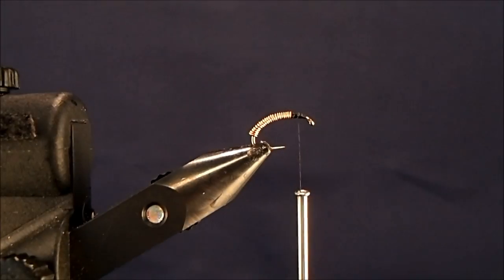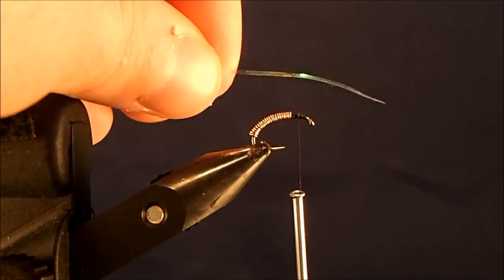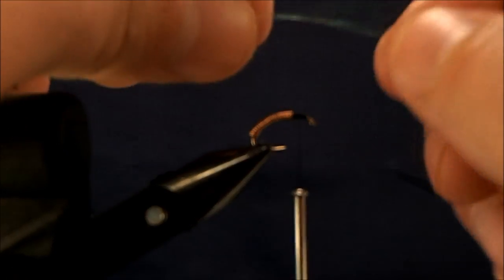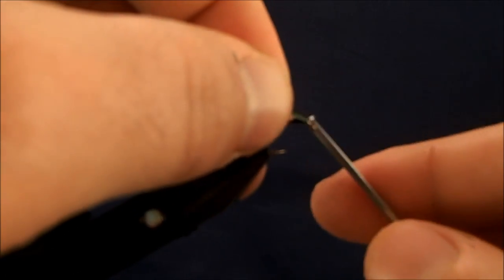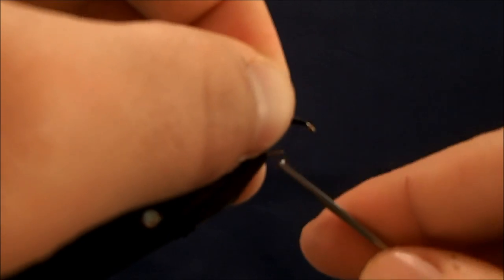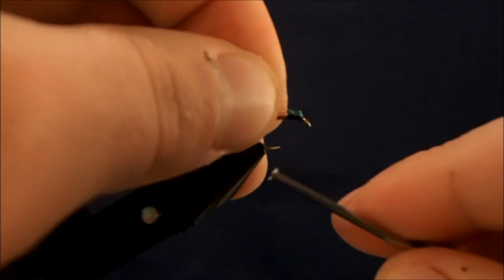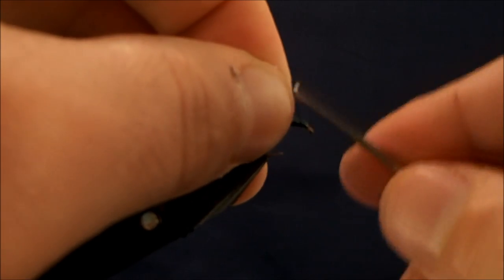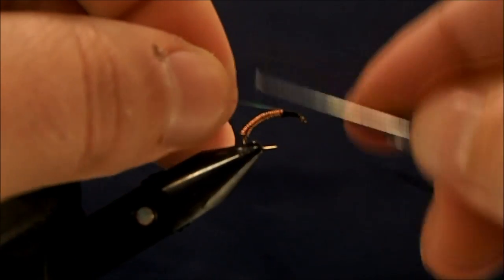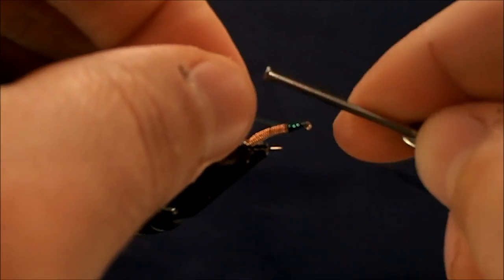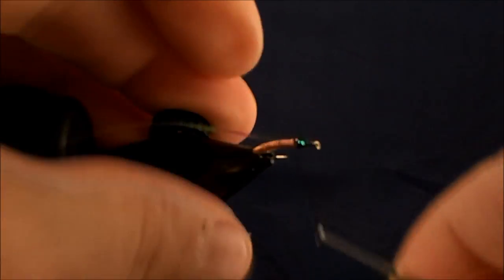So here's the flashback part of it. I use a pearl piece of tinsel. I'm just going to tie that to the back of the fly. This is going to look like a little wing casing. And you can see there, I just want to make sure that it's nice and centered.